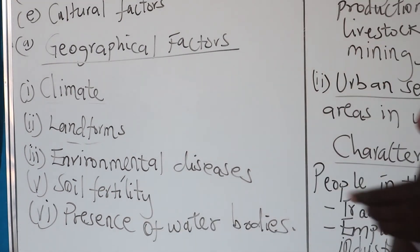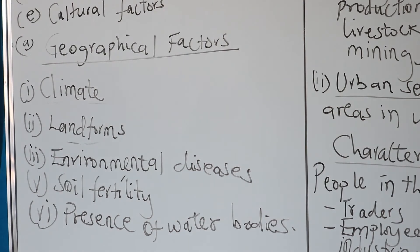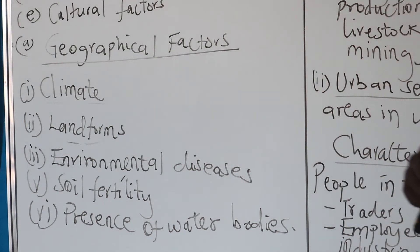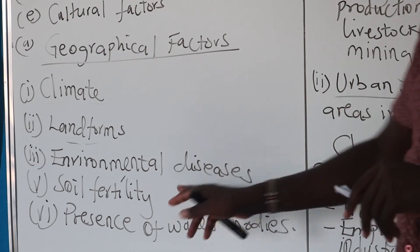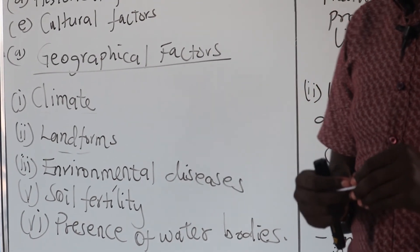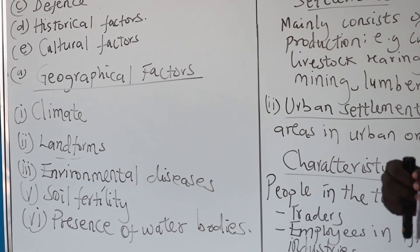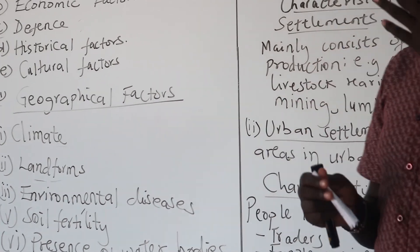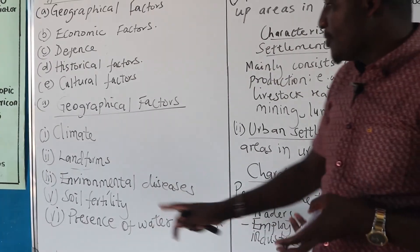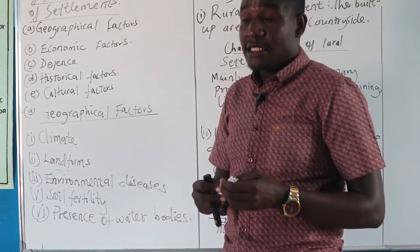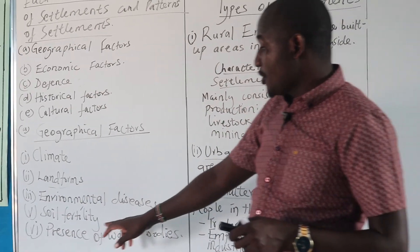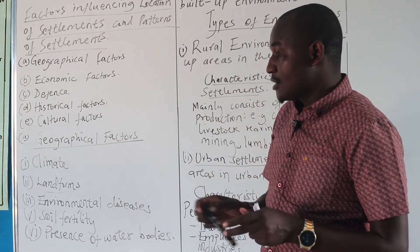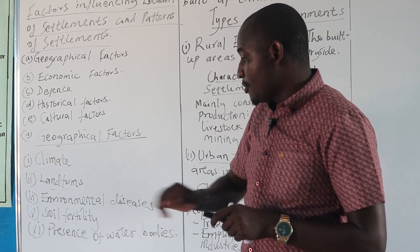Point five is soil fertility. Generally, areas with fertile soil will encourage agricultural activities, and so many farmers will settle around these places with fertile soil to carry out plantation agriculture. At the end of the day, this is going to result in large-scale settlements of people, or a densely populated area.